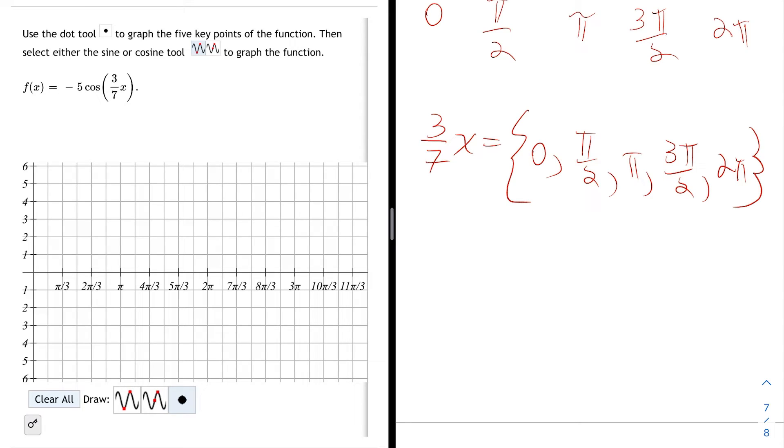First thing I want to do is multiply both sides of all 5 equations by 7. When I multiply the left side by 7, all of them just give me 3x when the 7ths cancel. If I multiply the right sides, the first one is 7 times 0, which is 0. Then 7 times π/2, which is 7π/2.